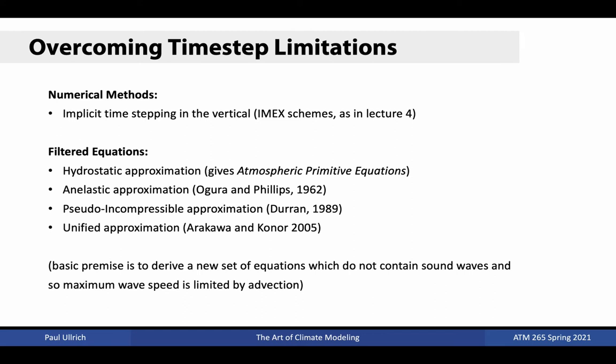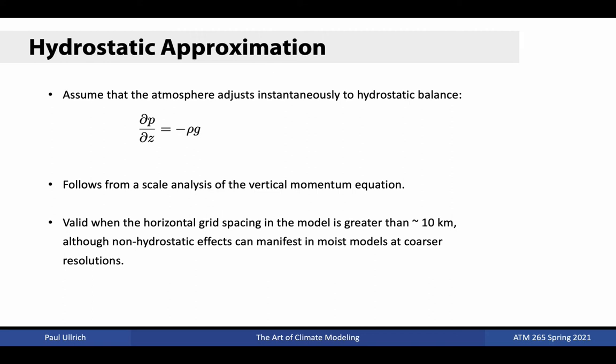Of these options, the vast majority of global atmospheric models employ the hydrostatic approximation. The basic assumption is that the atmosphere adjusts instantaneously to hydrostatic balance. Normally, the adjustment would be driven by vertically propagating longitudinal waves, but by assuming instantaneous adjustment, we effectively remove these waves from the system. It is notable that the hydrostatic approximation is only justifiable when the horizontal grid spacing is greater than 10 kilometers. At finer grid spacing, hydrostatic models are unable to correctly represent convection. For models spanning all possible horizontal scales, operational centers have largely employed a non-hydrostatic equation set coupled with an IMEX time-stepping scheme.